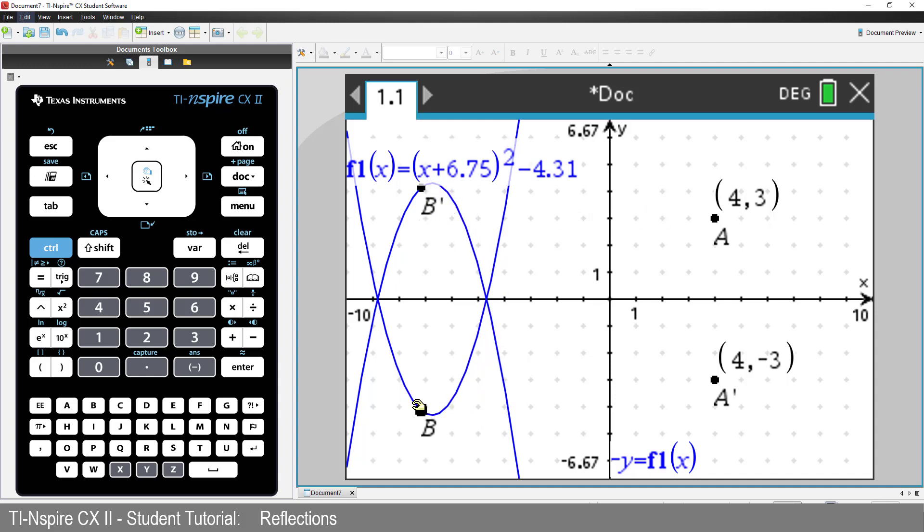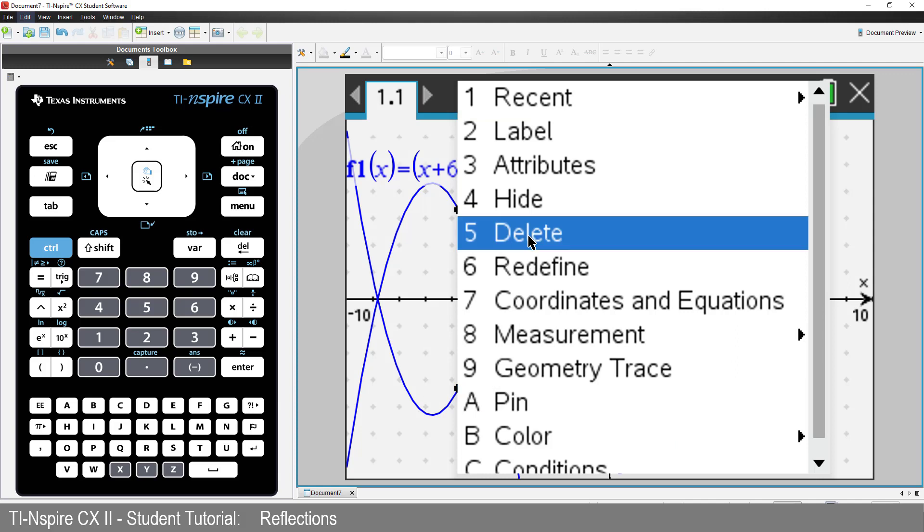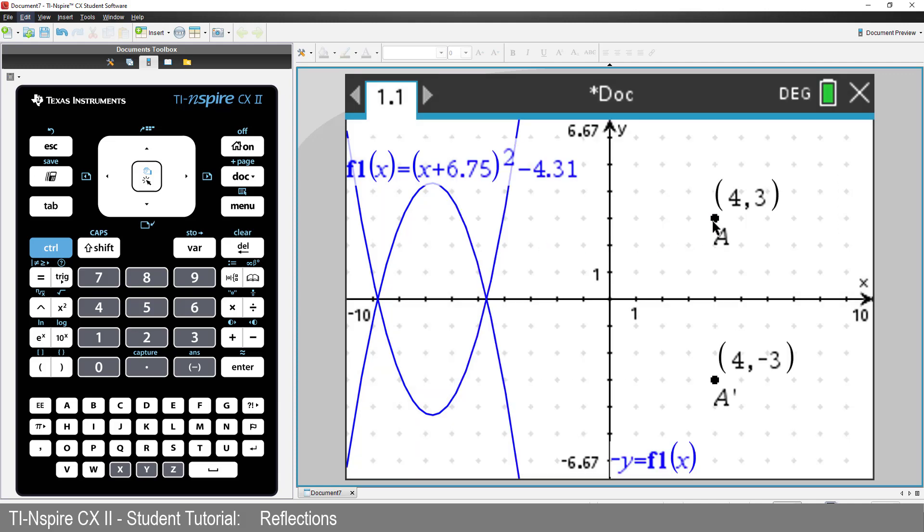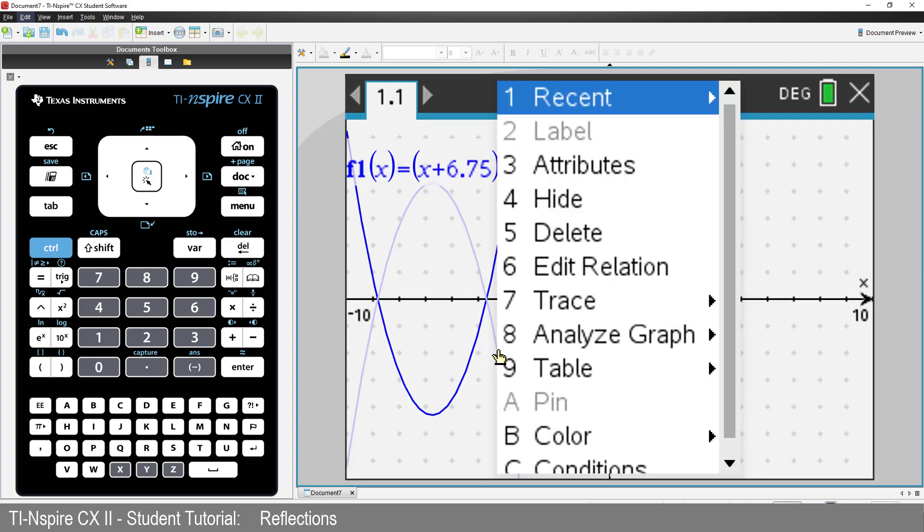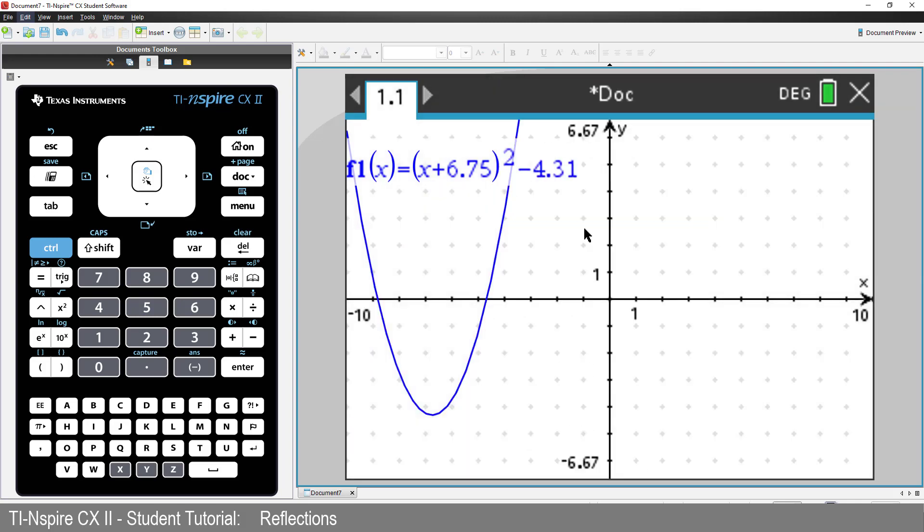Now for the challenge, our final reflection. A reflection in the line y equals x. Let's delete all the reflections in the x-axis. A mirror can be a line, but not an equation. So I need to draw a line representing y equals x. Press Menu, select Geometry, Points and Lines, and finally Line.